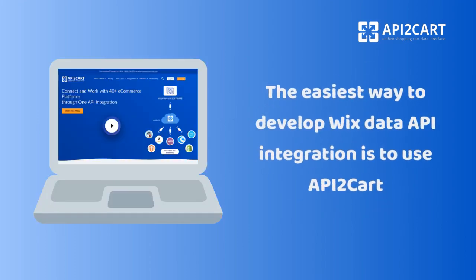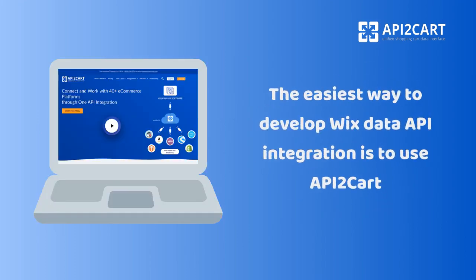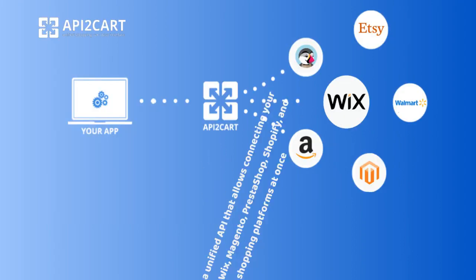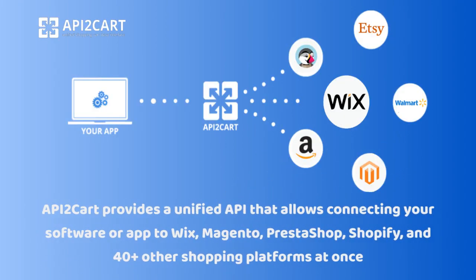The easiest way to develop Wix data API integration is to use API2CART. API2CART provides a unified API that allows connecting your software or app to Wix, Magento, PrestaShop, Shopify, and 40-plus other shopping platforms at once.